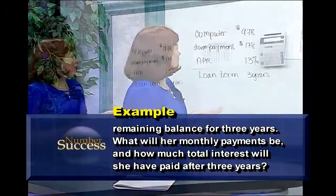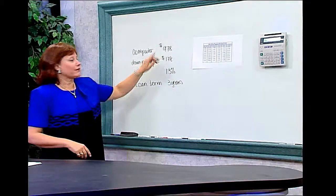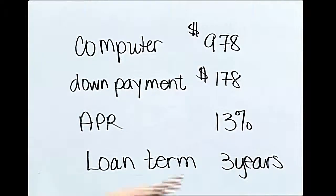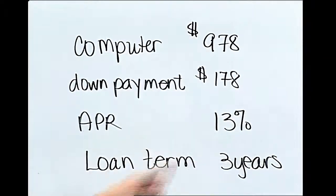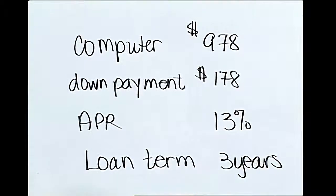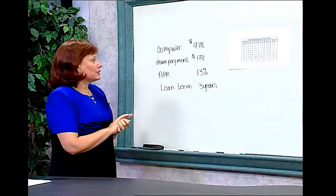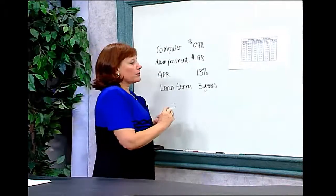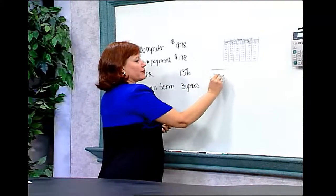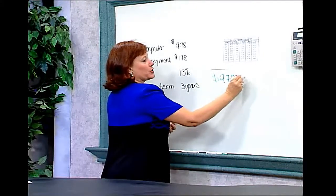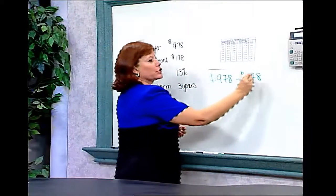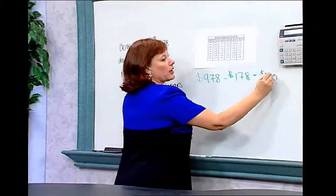The information is on the board. The computer cost $978. Her down payment was $178. Her loan is at an APR of 13%, and she's taking out a loan over a three-year period. The first thing we need to do is find out how much money she is actually borrowing. Her computer cost $978, but she paid $178 as a down payment, which tells us she needs to borrow $800 in all.